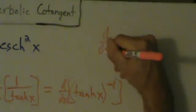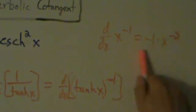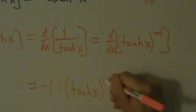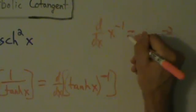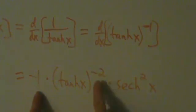So the big guy is to the negative first power. If we just have x to the negative first, the derivative is negative 1 times x to the negative 2. The chain rule says: take the derivative of the big guy, evaluate it at the little guy, and multiply by the derivative of the little guy. The little guy is hyperbolic tangent of x, and from the last video we know the derivative of tanh of x is hyperbolic secant squared of x. So: derivative of the big guy evaluated at the little guy, times the derivative of the little guy.